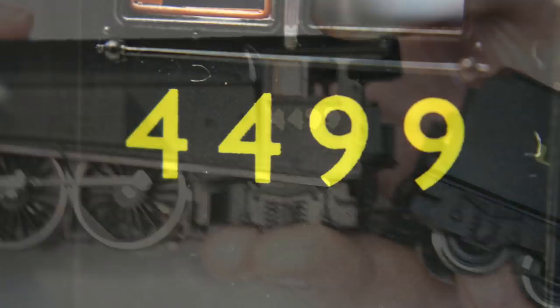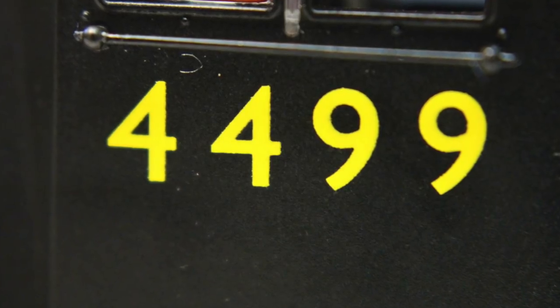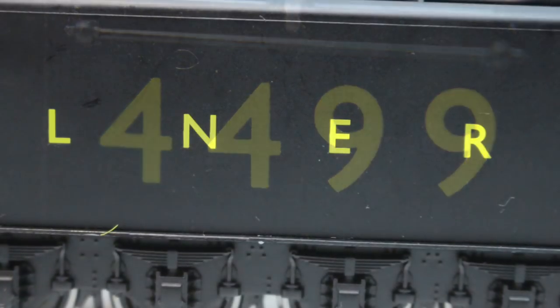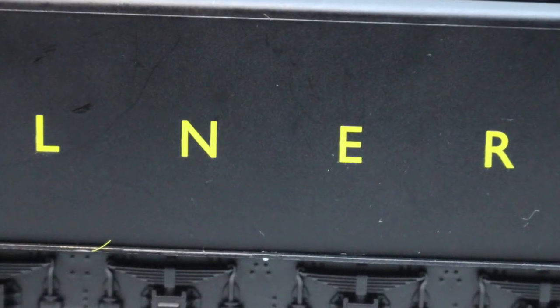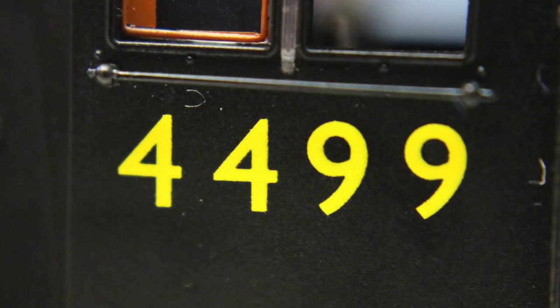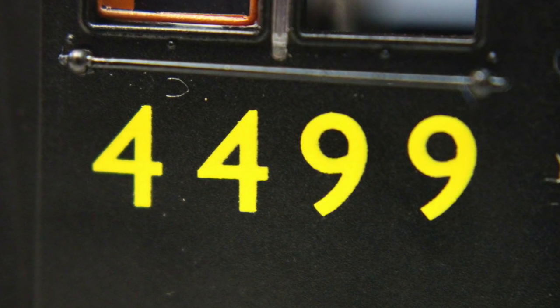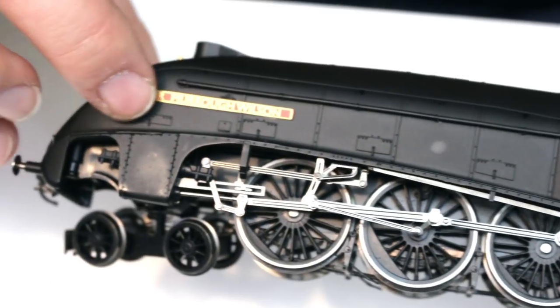And also what appears to be a wooden surround on the side windows too. It's little details like this that really bring out a livery of this type. The tampo printing is really sharp so we haven't got a lot to see on the side. The LNER is pretty basic with no shading on there and same for the 4499 but it is sharp and it is clear and actually the black shows up this lemon yellow so so well.